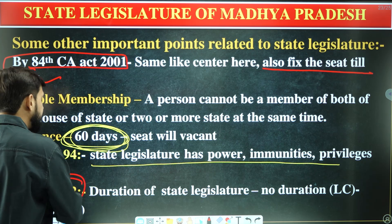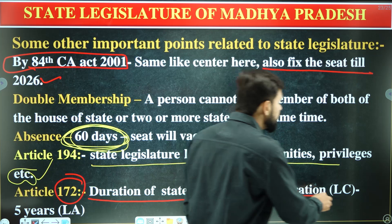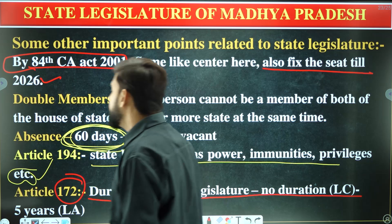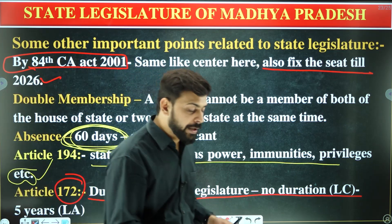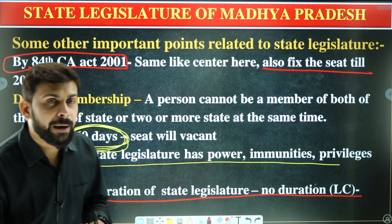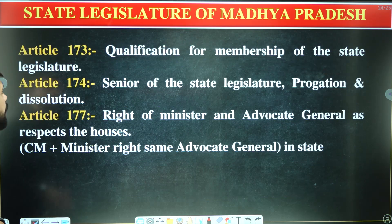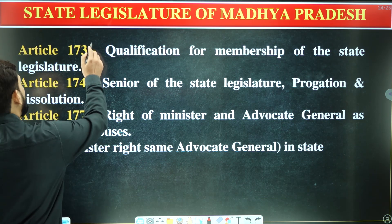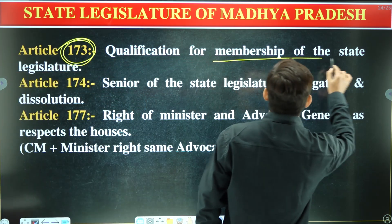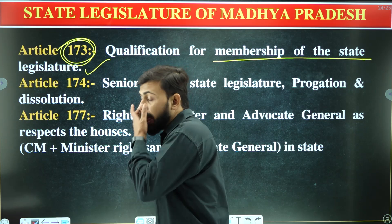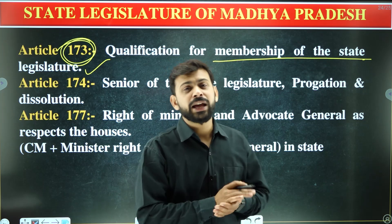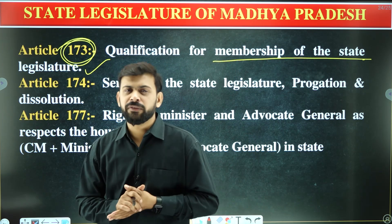Article 172 covers the duration of the state legislature — it mentions that no duration for the legislative council is specified, whereas the legislative assembly has a five-year term. Article 173 provides the qualifications for membership of the state legislature, defined within the state legislature provisions.